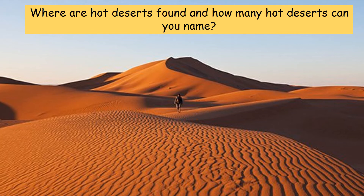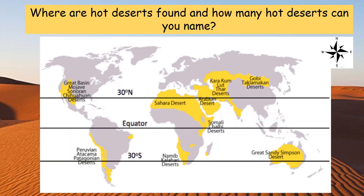Hot deserts: do you feel like you could name many of them — even more than two or three? We mainly find hot deserts around 30 degrees north and south of the equator. As mentioned earlier, air rises at the equator and sinks 30 degrees north and south — it's those areas where we tend to get hot deserts.